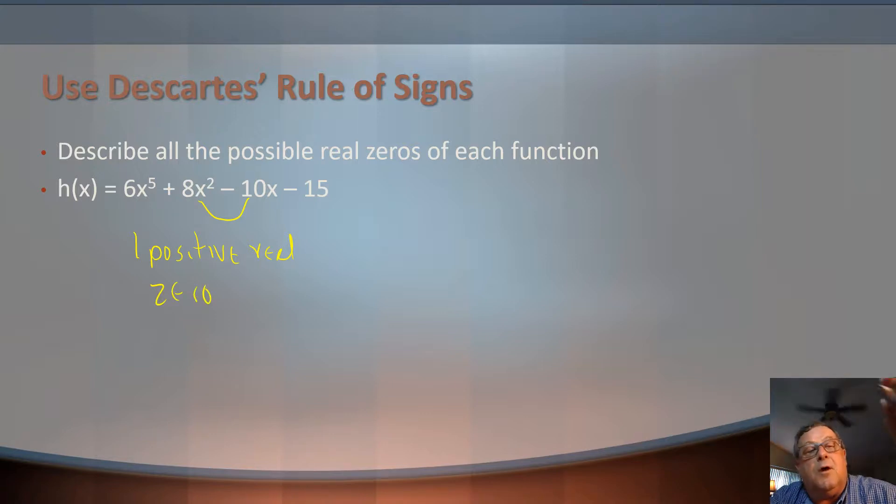Now, then we would go in here and say, what about h of negative x? Here's a tip: if the variable is raised to an odd numbered exponent, the sign can change.